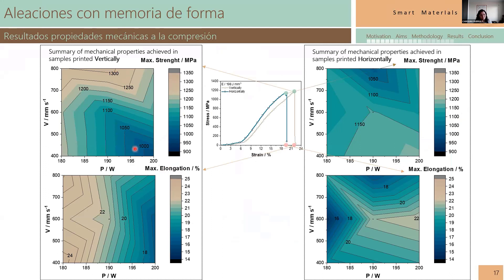I constructed this graph to compare and identify which combination of laser power and scan velocity gave the best results. As you see, we have the maximum strength and maximum elongation for vertical samples. The best combination for maximum strength was at high scan velocity. When checking elongation, lower power at any velocity gave a good elongation. Combining both, at lower power and high velocity we can achieve good maximum strength and elongation simultaneously.